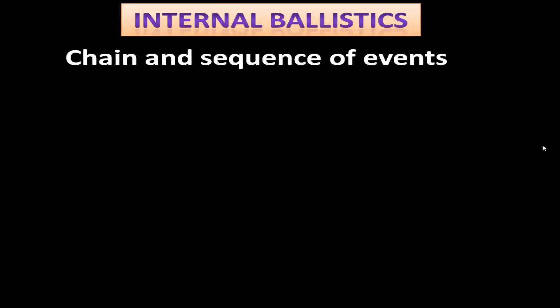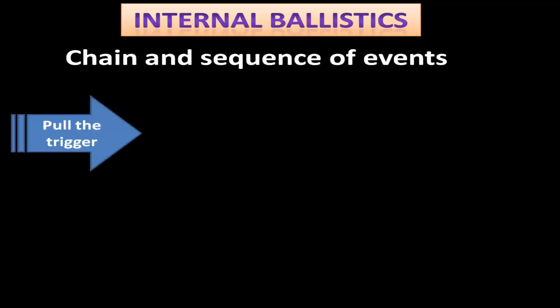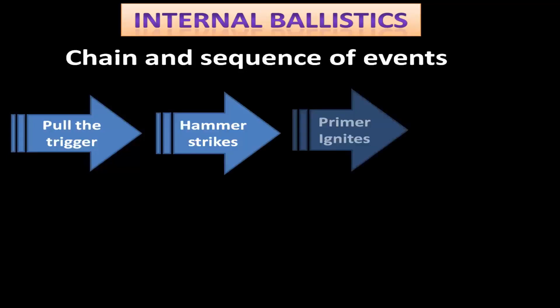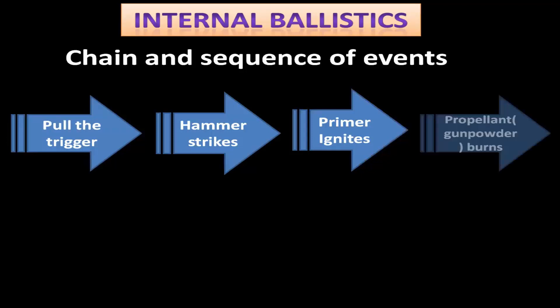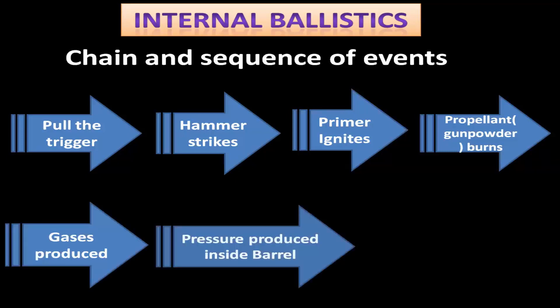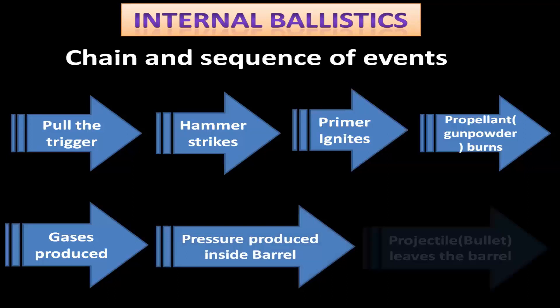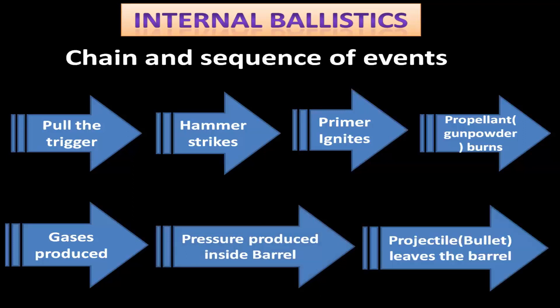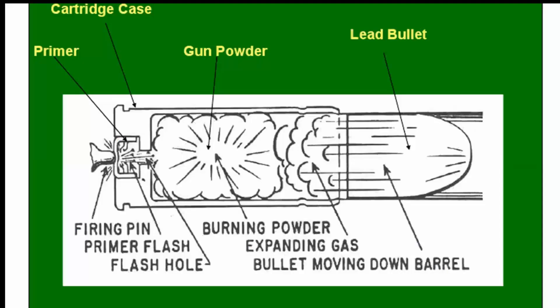Let us look at the chain and sequence of events — how ammunition or a bullet is fired. When you pull the trigger, the hammer strikes the primer. Because of the pin pressure on the primer, the primer ignites and burns the propellant. Gunpowder burns, gases are produced, and due to the pressure produced by the gases inside the barrel, the projectile, bullet, or shotgun ammunition exits the barrel.